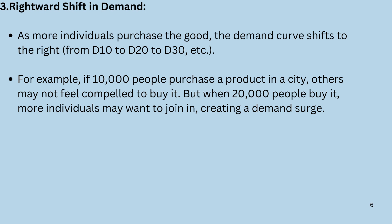As more individuals purchase the good, the demand curve shifts to the right — from D10 to D20 to D30, and so on. For example, if 10,000 people purchase a product in a city, others may not feel compelled to buy. But when 20,000 people buy it, more individuals may want to join in and create a demand surge.